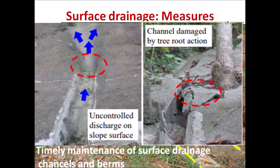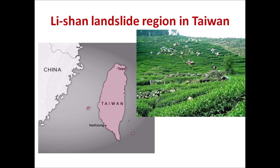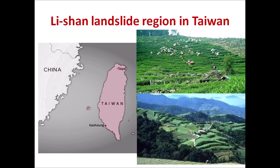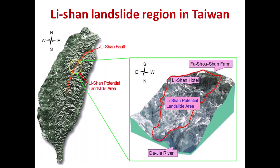First we will store the surface water. This is the subsurface drainage area. We have already found a drainage gallery and a drainage well. Let's explain the story of Taiwan. We have found a Lishan landslide area. We are talking about the Lishan Landslide region in Taiwan. There is a landslide in the 1990s, in April of 1990, in the Darjea River area.